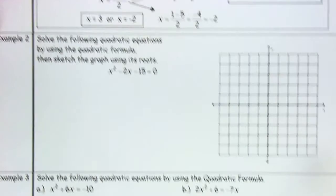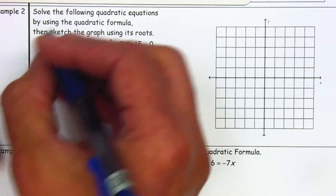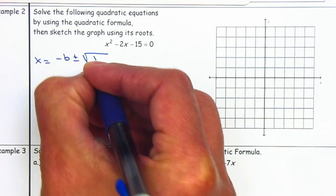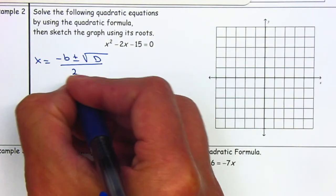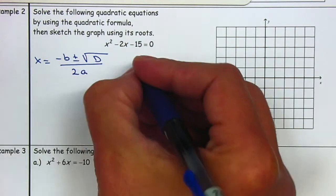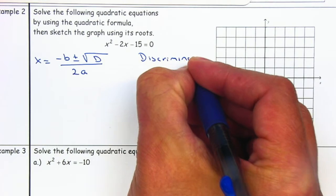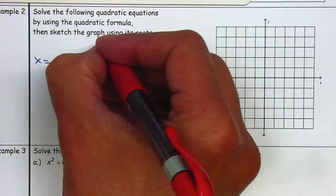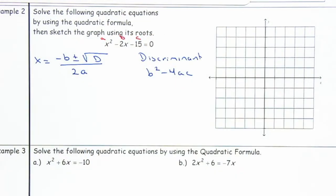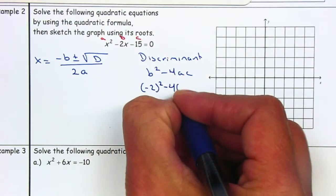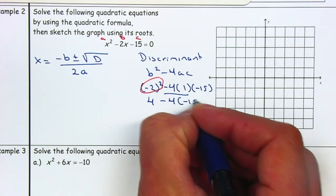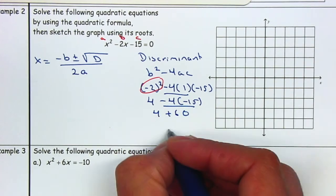Let's look at example number 2: solve the following quadratic equation using the quadratic formula. The formula is x equals negative B plus or minus the discriminant — which is b squared minus 4ac — all over 2A. Let me find my discriminant first. A is 1, B is negative 2, and C is negative 15. So b squared minus 4ac: negative 2 squared gives 4, minus 4 times 1 times negative 15 gives positive 60, so the discriminant is 64.